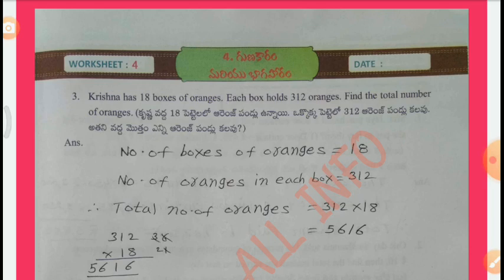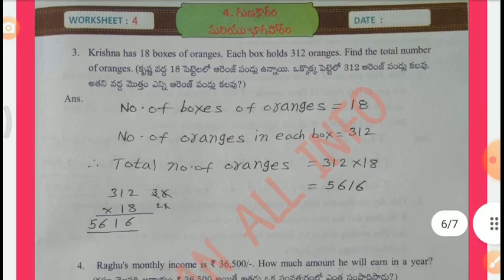Problem 3: Krishna has 18 boxes of oranges. Each box holds 312 oranges. Find the total number of oranges. Solution: Number of boxes = 18. Number of oranges in each box = 312. Therefore, total number of oranges = 312 x 18. By multiplication, we get 5,616.